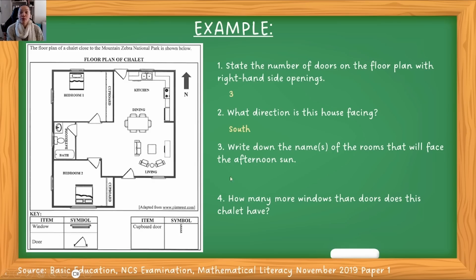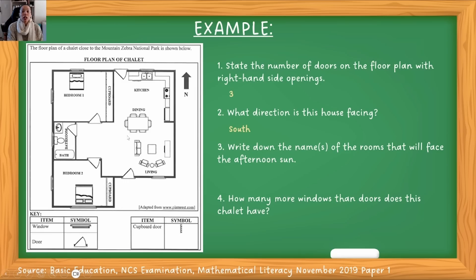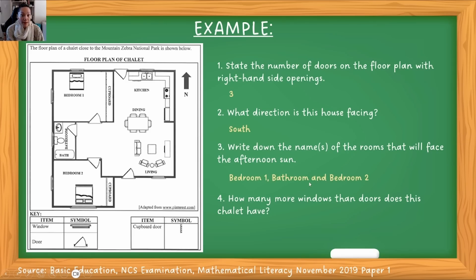Next question: write down the names of the rooms that will face the afternoon sun. Here they're checking that you know the sun rises in the east and sets in the west, and where that is in relation to the floor plan. We know that north is this way. If the sun is rising in the east, it's going from right to left — so on the right side in the morning, and moving over to the left side in the afternoon, which is the afternoon sun. So the three rooms that will get afternoon sun will be bedroom one, the bathroom, and bedroom two, which are all on that side.